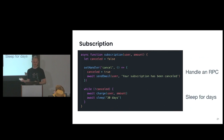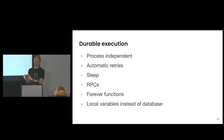In summary, durable execution is process independent — if one process running the function dies, it continues running from the same place on a new process. It has automatic retries for any code that might fail due to network issues. It can sleep for an arbitrary period of time, receive RPCs, run forever, and you can use local variables instead of a database.